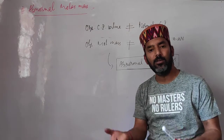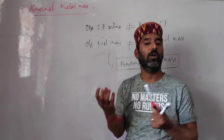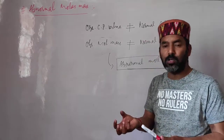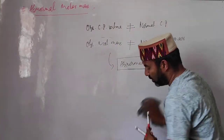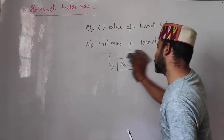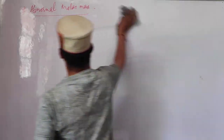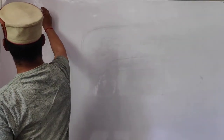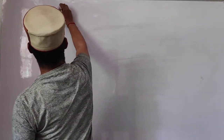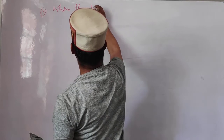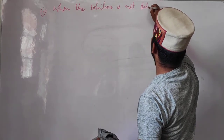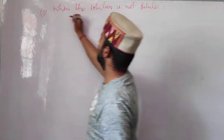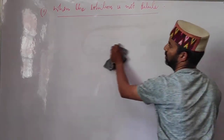Substances are said to have abnormal molecular mass when the solutions are not dilute, or the solute is volatile, or the solute undergoes association or dissociation in the solution. There are three reasons for getting abnormal molecular mass. The first reason is when the solution is not dilute.